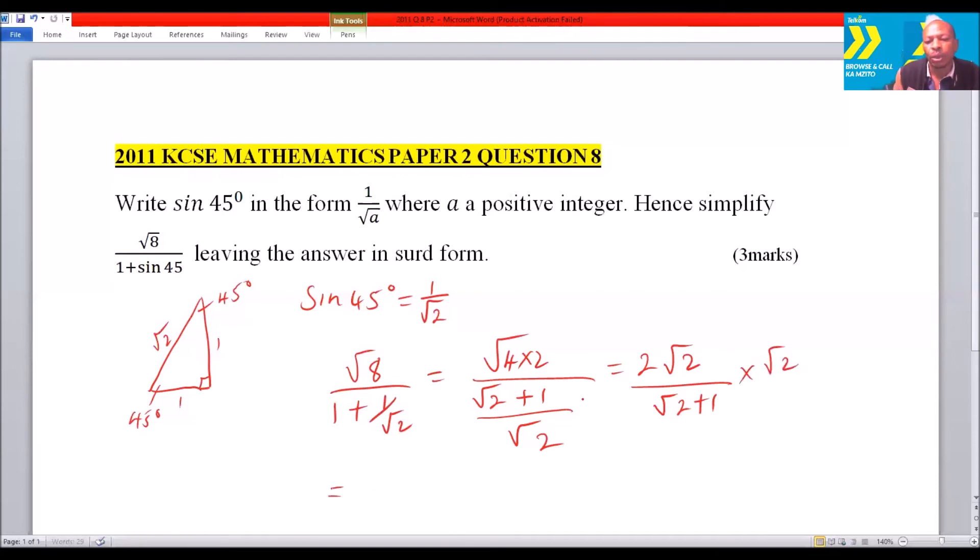This is divided by √2 + 1. To simplify this, we multiply by the conjugate of √2 + 1, which is √2 - 1, divided by √2 - 1.